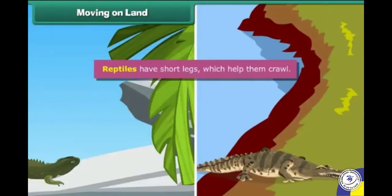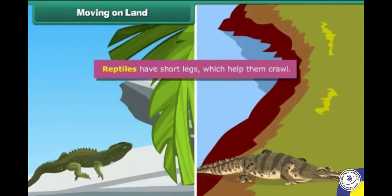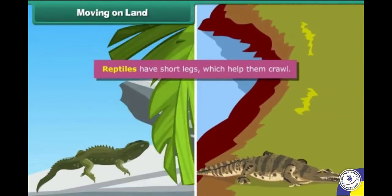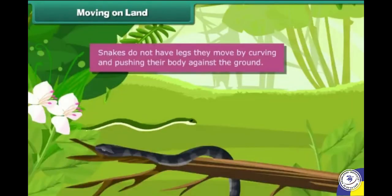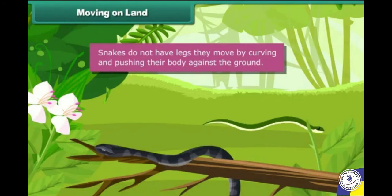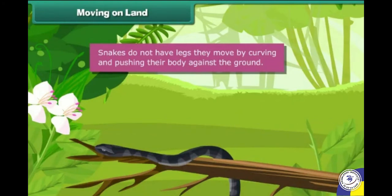Reptiles have short legs which help them crawl. Snakes do not have legs — they move by curving and pushing their body against the ground.